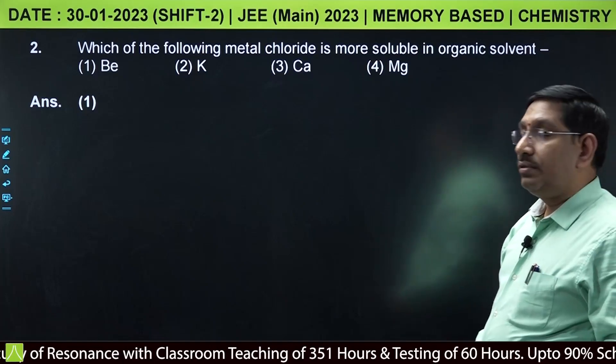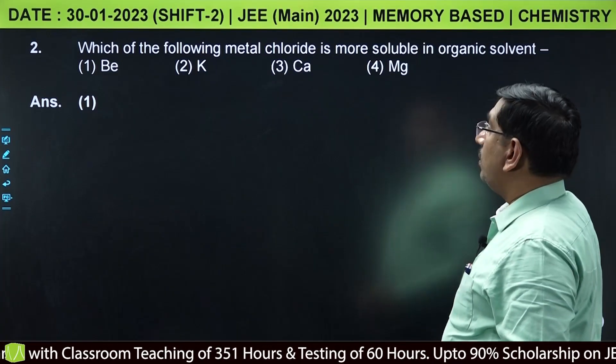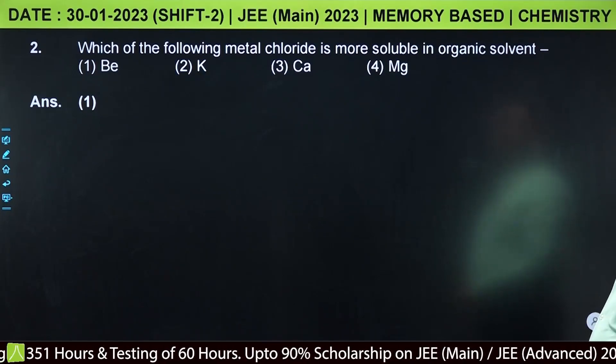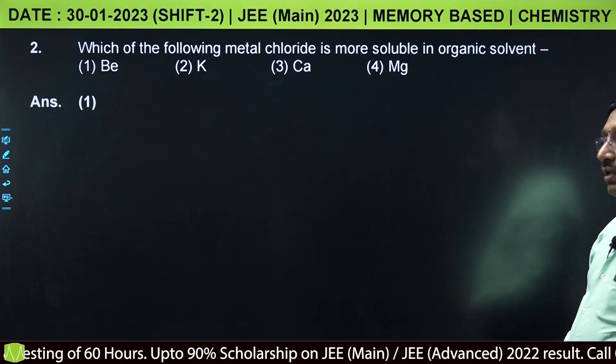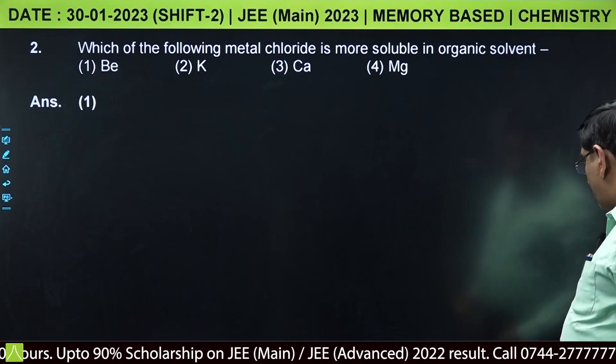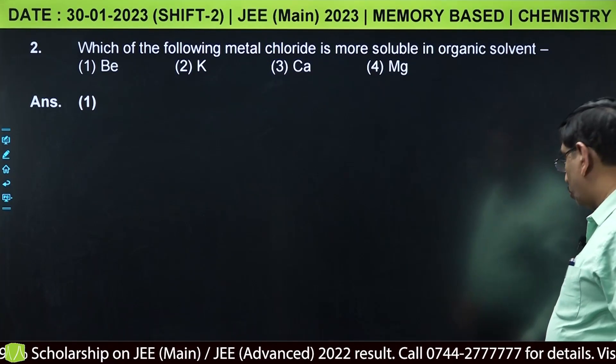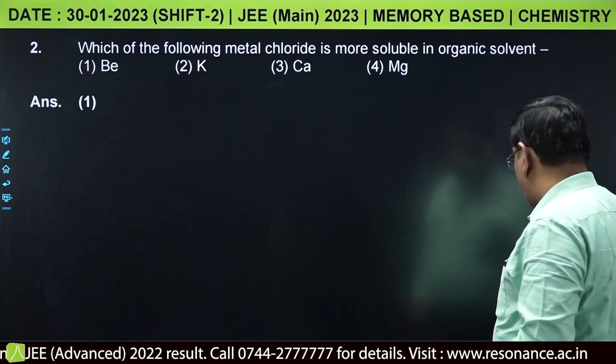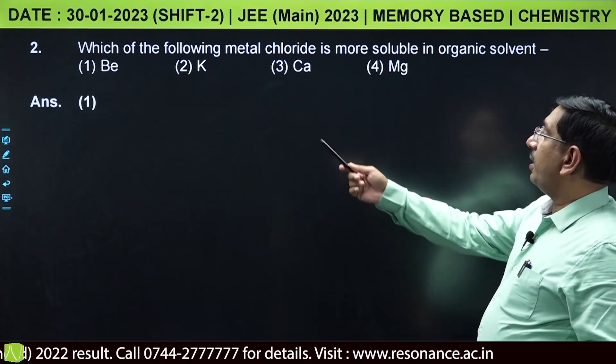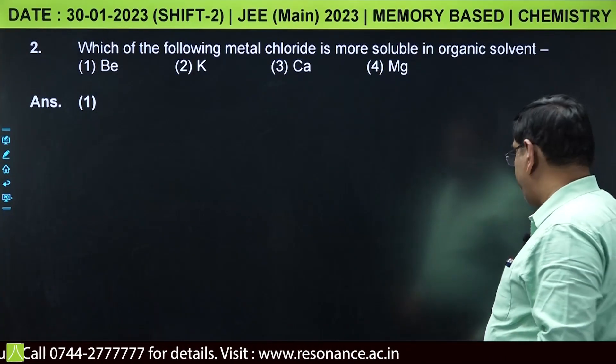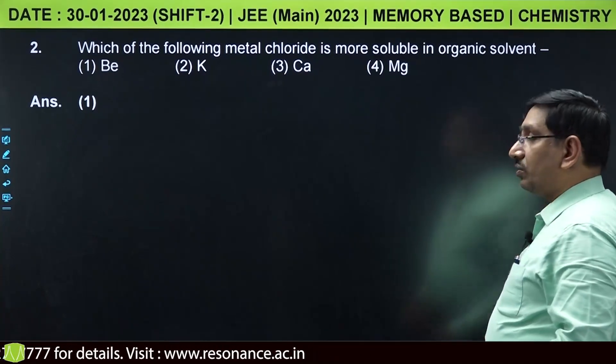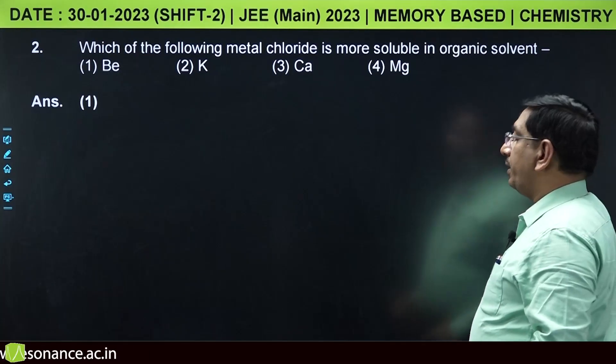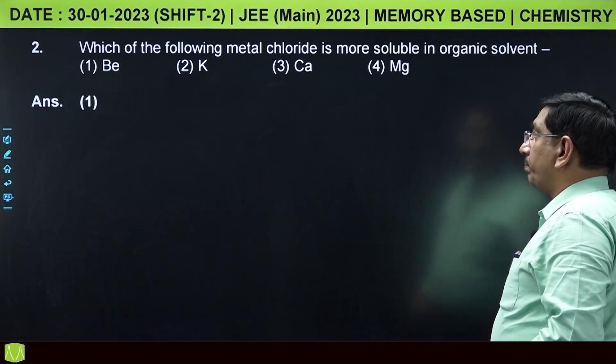The second question is from S block. Which of the following metal chlorides is more soluble in organic solvents? In organic solvents, which are non-polar, covalent compounds are more soluble. Here in the given compounds, beryllium chloride is the covalent compound, so the answer is beryllium.